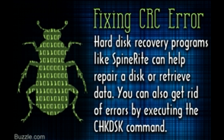For fixing a cyclic redundancy check error, you may have to resolve hardware issues such as bad sectors in the hard drive. Often, removing dirt from external storage media such as CD or DVD from where the data is being copied works to stop the popping of error messages. A cyclic redundancy check is an error message that appears on the computer screen whenever your PC reads corrupt data.